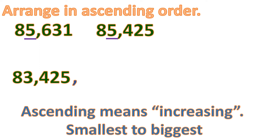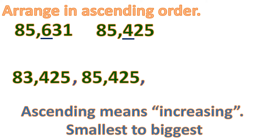Then we will compare the remaining numbers. Since they both have 5 in the 1,000th place, we will compare the next place value, which is the 100s. They have 6 and 4, so the one with 4 as the digit is the one with the smaller value. That means it is the next number. And the last is the remaining number, which is 85,631. So here is the set of numbers in ascending order.